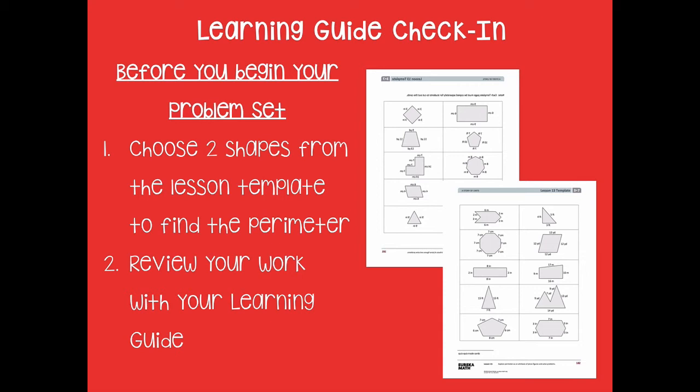If you struggle with completing and finding the perimeter of your two shapes, then just choose another shape to be able to review with your learning guide. You can also take these templates, cut the squares out to themselves and have one square for each shape, turn them over, and then you could just pull them out like one card at a time just for extra practice of finding the perimeter.